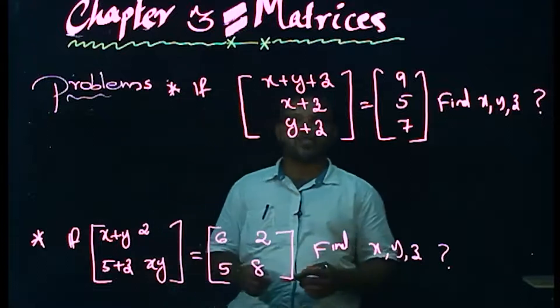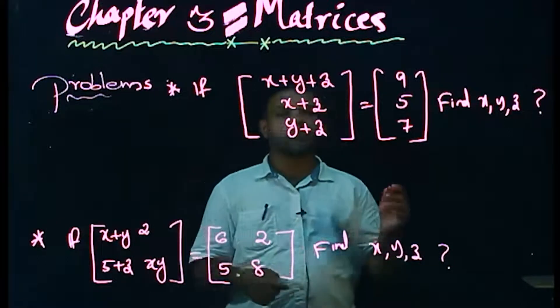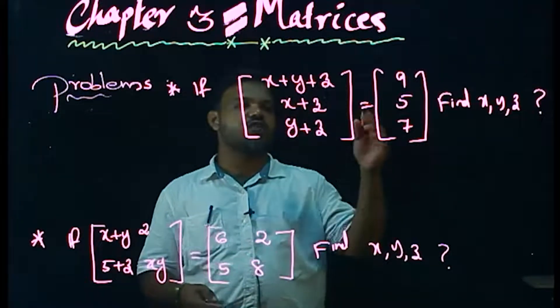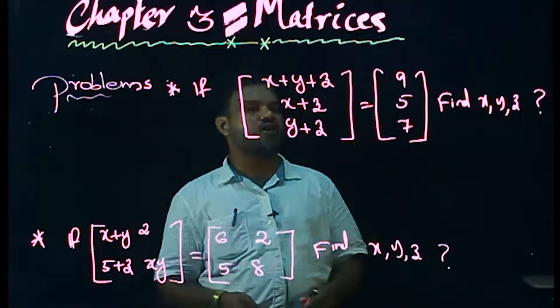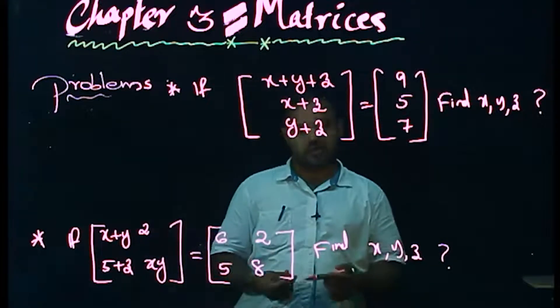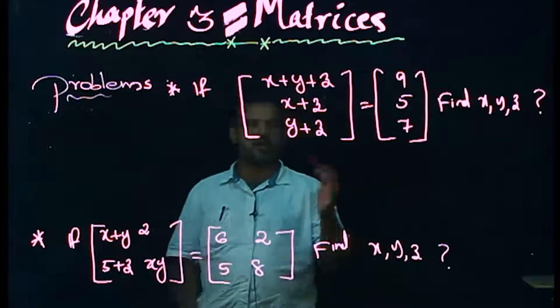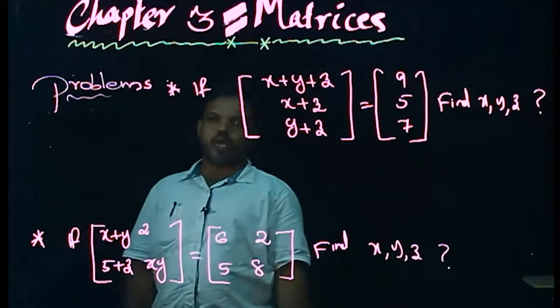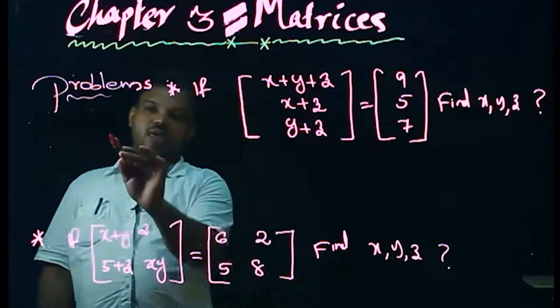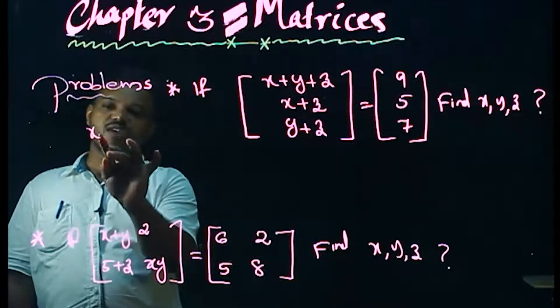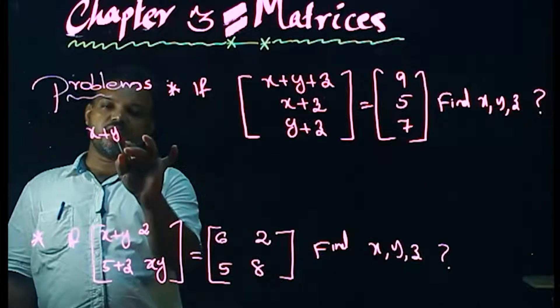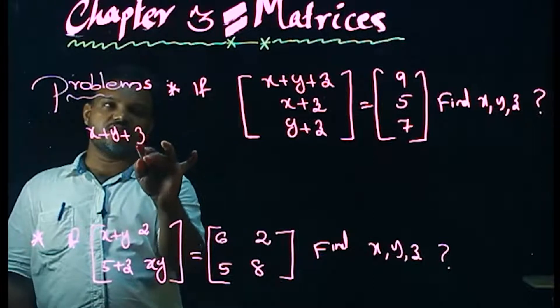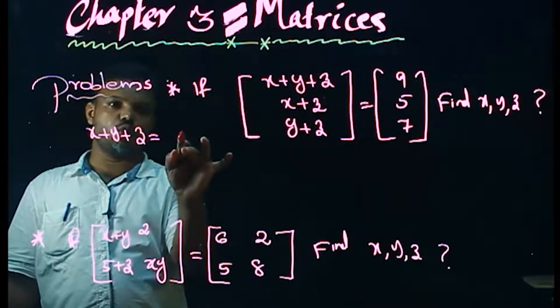If the matrix [x plus y plus z, x plus z; y plus z] equals [5, ...], find x, y, z. By equating corresponding elements: x plus y plus z equals 8, x plus z equals 5, and y plus z gives the third equation. Solving these simultaneously gives the values of x, y, and z.